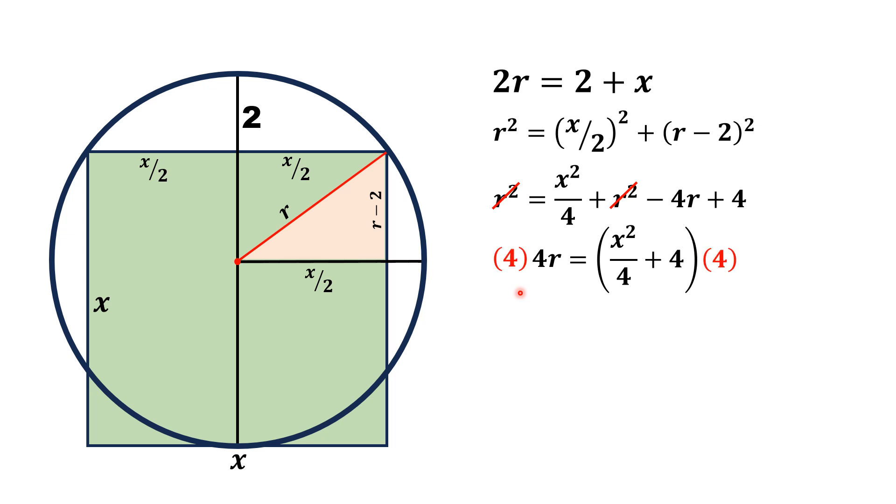Multiplying by 4 on both sides, we will get 16r on the left and x² + 16 on the right. 16r can be written as 8 times 2r, and substituting the value of 2r which is 2 plus x, we will get 8(2 + x) = x² + 16.